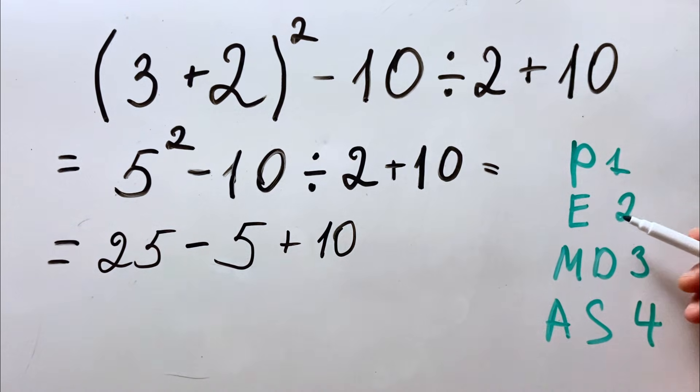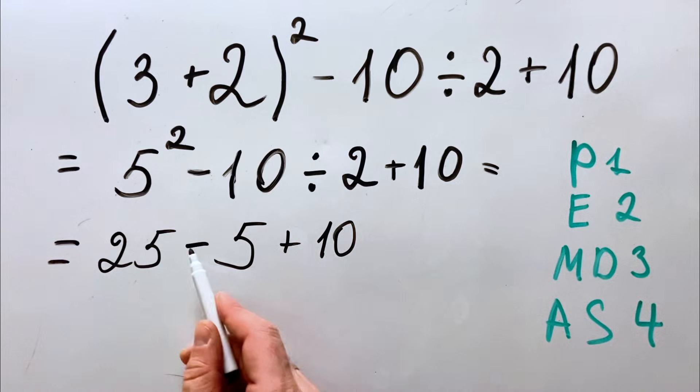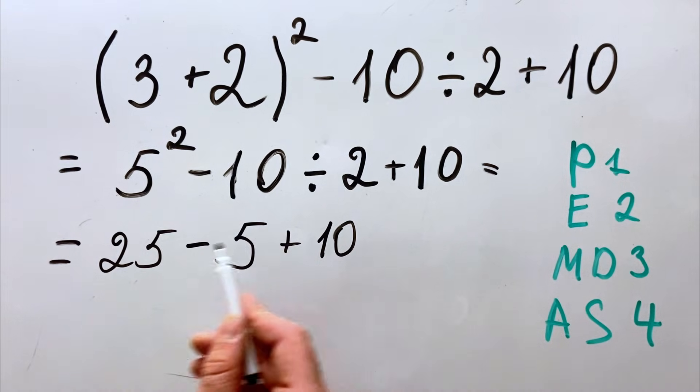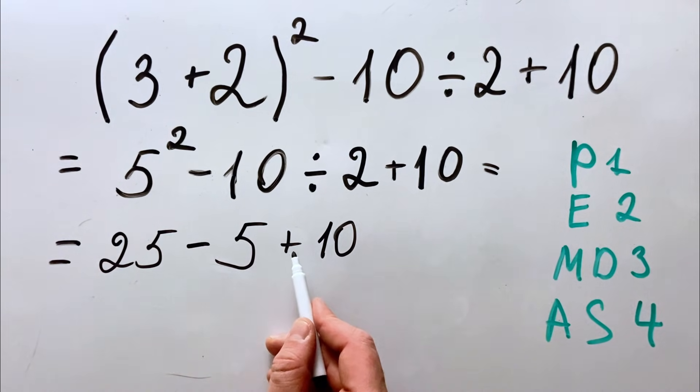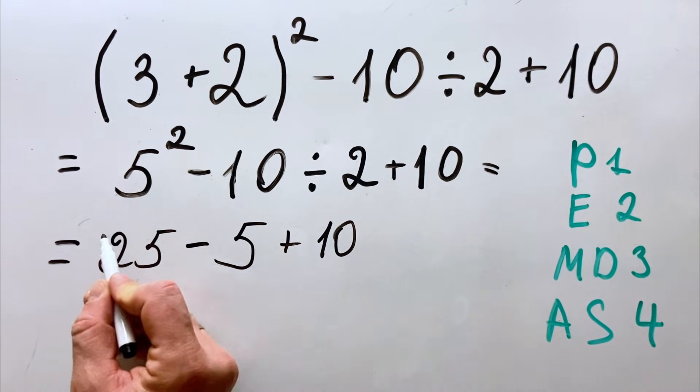Now we did parentheses, exponents, and division. Now what is left is the fourth place: we do subtraction and addition. There is no specific order, so you can do first addition then subtraction, or to not get confused, just do it from left to right.